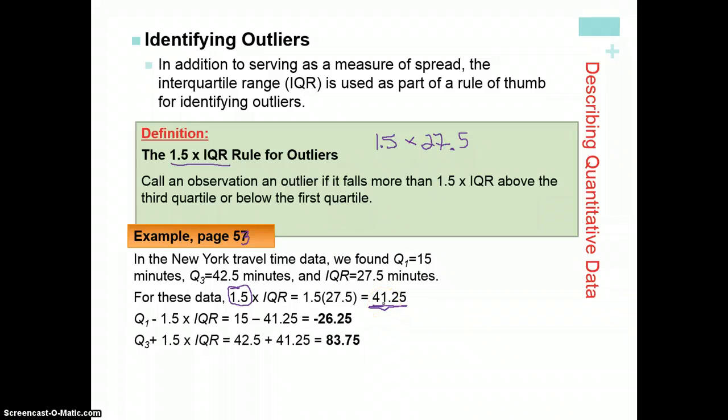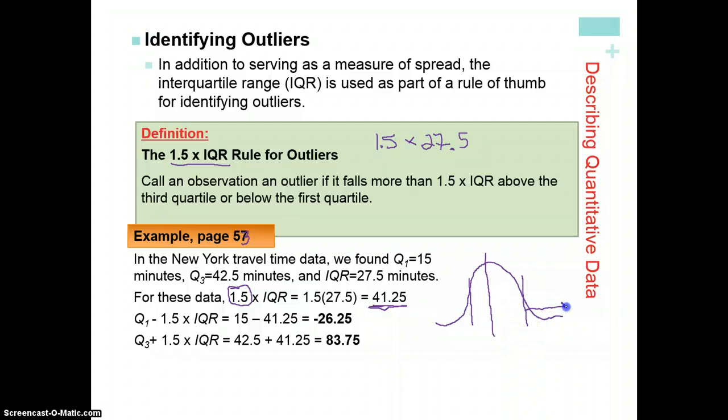And how we find our outliers is we subtract. So let's think about that. This is our median, here's our first quartile, and here's our third quartile. Anything 1.5 times the IQR plus Q3, anything that falls outside of that is going to be an outlier. And then anything 1.5 times the IQR minus the first quartile will be an outlier on the left side. And it just kind of depends on the skewness or the shape of the distribution whether you're going to have outliers on each side.